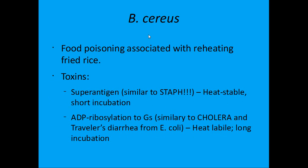Bacillus cereus causes food poisoning associated with fried rice and Chinese food. What happens is the spore is already in the rice; as you leave the rice out, the bacteria germinate and release toxin onto the rice. Once the toxin has been released, you can refrigerate or reheat the food, but you're not going to disable that toxin — and you'll have a terrible time.